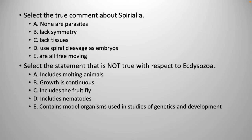'Select a true comment about Spiralia.' D — spiral cleavage as embryos. 'Select the statement that is not true with respect to the Ecdysozoans.' It's B — growth is continuous. When they go through growth, they reach a stage where they have to shed their old skeleton, so growth is not continuous. It kind of stops and then goes on. And nematodes are part of Ecdysozoa — it's arthropods and nematodes. The fruit fly is an insect, so that's an arthropod.